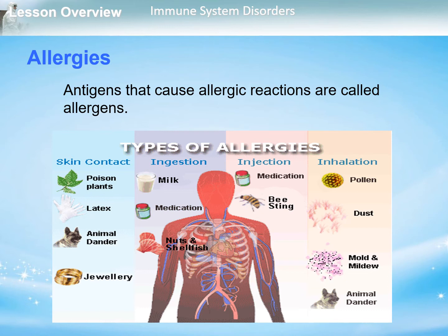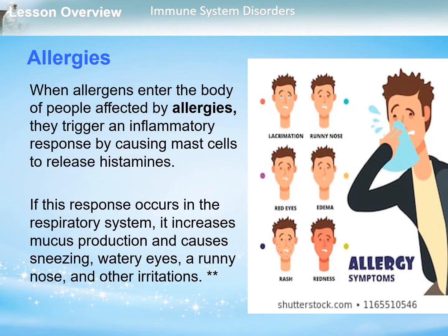Pet dander — the skin shed from cats and dogs — is a common allergen. You can also see in the figure the types of allergens: through skin contact, when ingested, when injected, and when inhaled. When allergens enter the body of people affected by allergies, they trigger an inflammatory response by causing mast cells to release histamines.